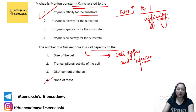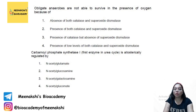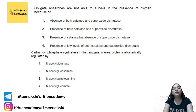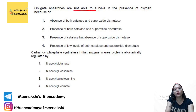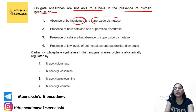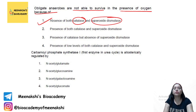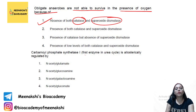Obligate anaerobes can survive only in the absence of oxygen. In the presence of oxygen, reactive oxygen species are generated which cannot be neutralized, leading to death. These organisms cannot survive in the presence of oxygen because they lack catalase and superoxide dismutase to neutralize those reactive oxygen species.